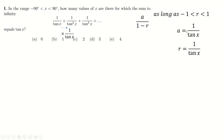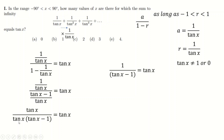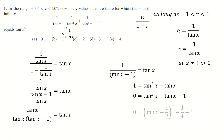Plugging a and r in and setting equal to tan x, the denominator simplifies: 1 − 1/tan x = (tan x − 1)/tan x. Dividing through, the tans cancel, leaving a cleaner expression. Cross-multiplying gives a quadratic — it's the golden ratio quadratic. Completing the square gives two solutions: (1 + √5)/2 and (1 − √5)/2, approximately 1.6 and −0.6.